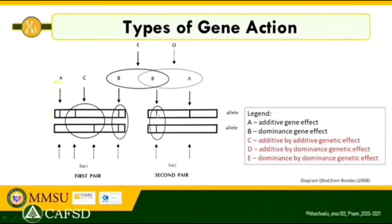Letter E is the dominance-by-dominance genetic effect, where at two loci we have dominance interacting with dominance. To summarize: additive gene action is letter A; non-additive gene action covers B, C, D, and E. Non-additive gene action is divided into dominance (letter B) and epistasis — where C, D, and E represent the subtypes: additive-by-additive, additive-by-dominance, and dominance-by-dominance genetic effects.